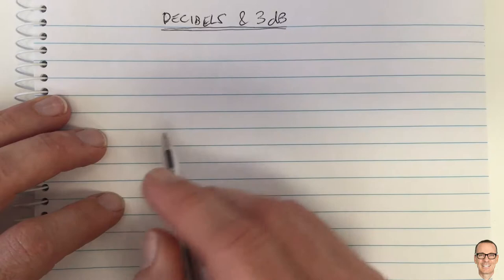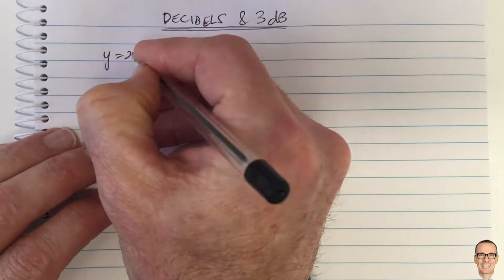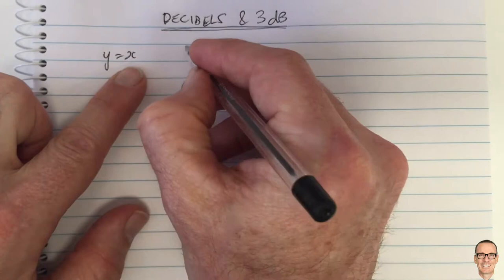Let's consider decibels and understand why the 3dB point is so important. We start by thinking of a linear relationship. If you had an input X and an output Y, if they were related by this where the output exactly equals the input...